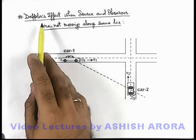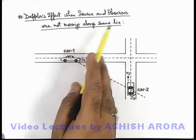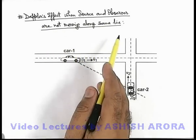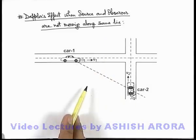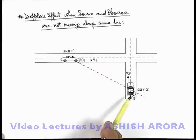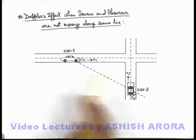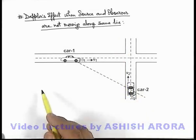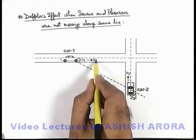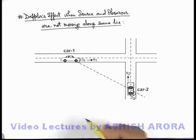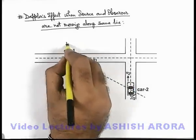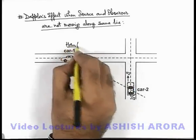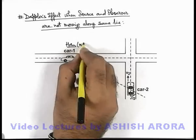Let's analyze Doppler's effect when source and observer are not moving along the same line. A similar situation we can see here — there are 2 cars which are moving on roads intersecting at right angle. Say car 1 is moving at speed v1, car 2 is moving at speed v2. In this situation car 1 produces a horn of frequency n-knot.